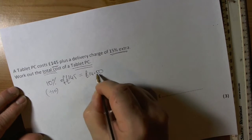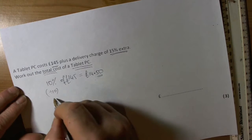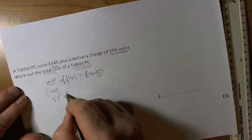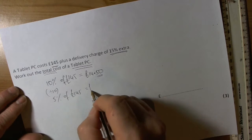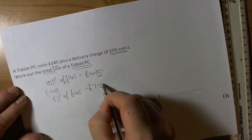Really important: money has two digits after the decimal point. So that's 10%. 5% then must be half of that value, which is £7.25.